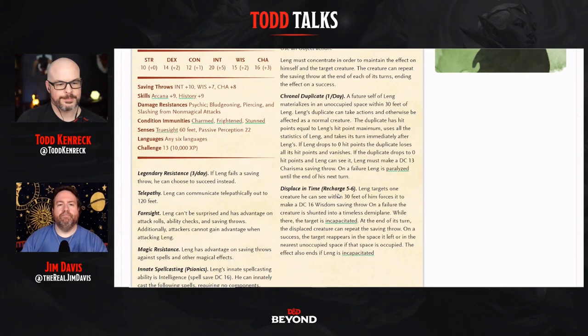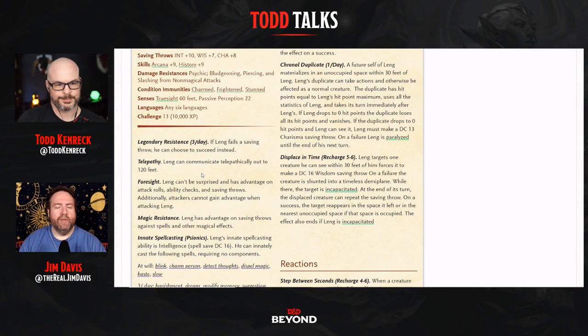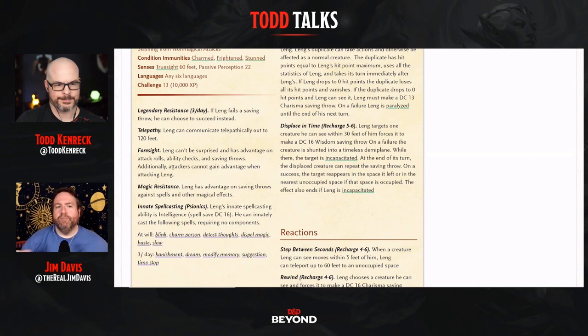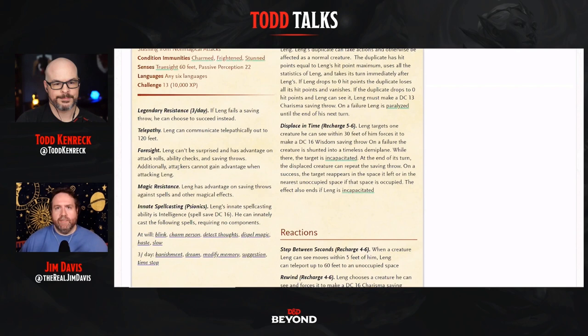Looking further down, he has Telepathy — I did not arrange these in alphabetical order, that's a demerit. I gave him Foresight: copied that language from the spell. He can't be surprised, has advantage on attack rolls, ability checks, and saving throws. Additionally, attackers cannot gain advantage when attacking Lang — they don't have disadvantage, they simply cannot gain advantage. That's an example of the exceptions-based rule system: normally you get advantage when you recklessly attack, after a Guiding Bolt, or using flanking — but not against Lang.